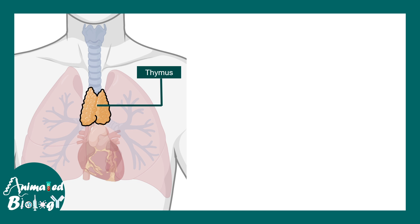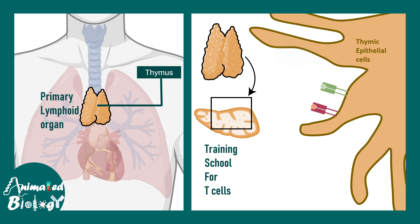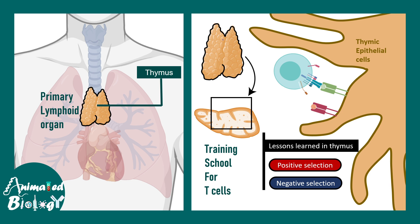The thymus is an organ which is the training school for T lymphocytes. It's basically a primary lymphoid organ which helps in the development of T cells. Inside the thymus, T cells undergo specific training known as thymic selection. There is positive selection, which teaches T cells to recognize peptides from an MHC molecule, and negative selection, which tells the T cell not to recognize self-peptides if presented on an MHC. That is why the thymus is really important for T cell production and overall immune response.